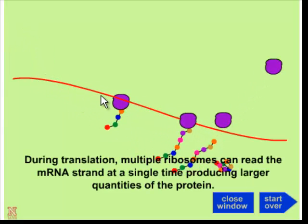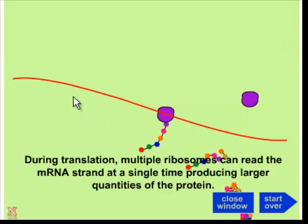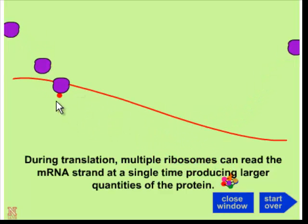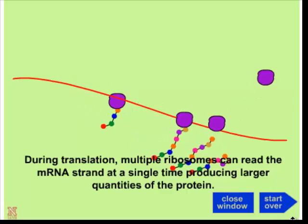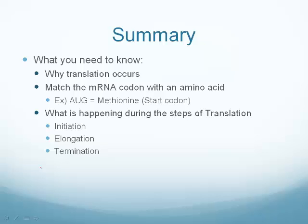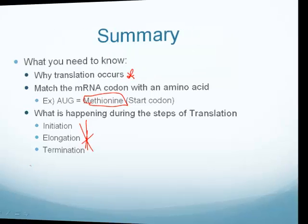This process happens multiple times simultaneously in our cells, because we need a lot of proteins — it's not happening just one at a time. In summary, what you need to know: why translation occurs, that methionine is coded for by the start codon AUG, and most importantly the three steps of translation — initiation, elongation, and termination — and what's happening at each step.